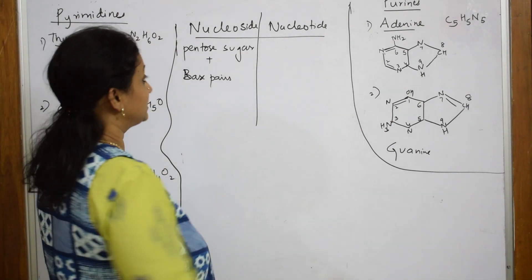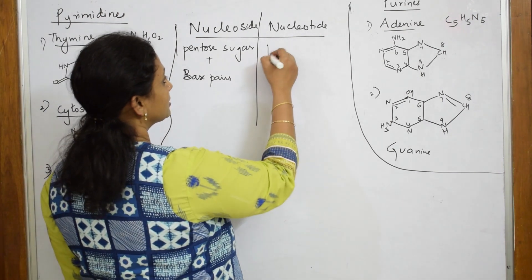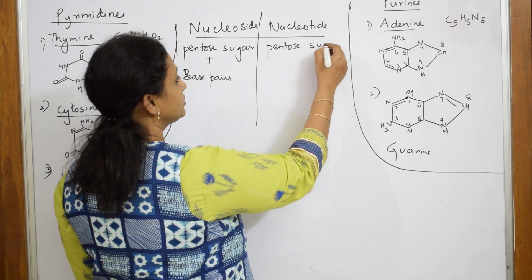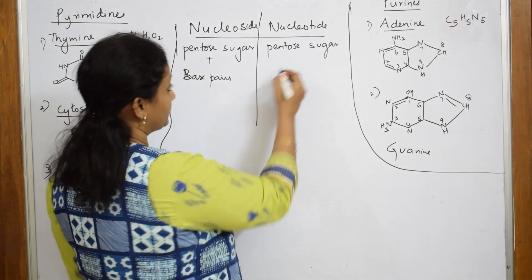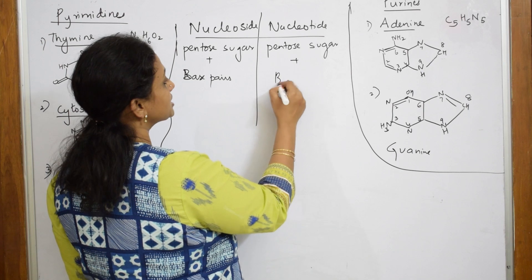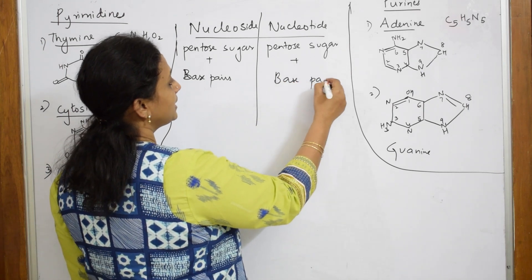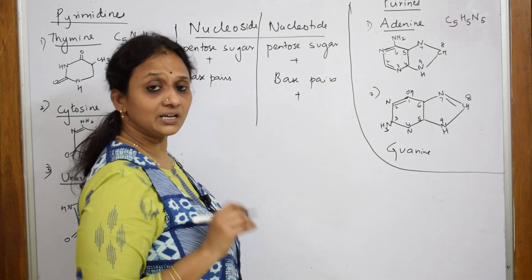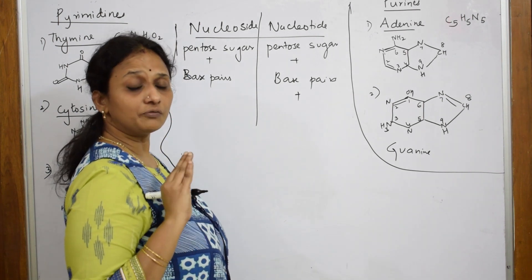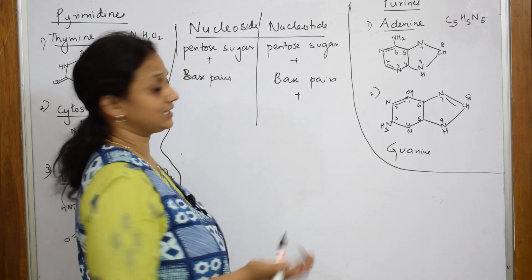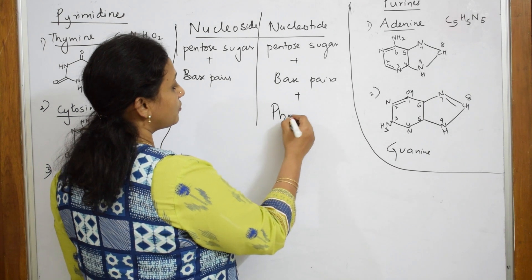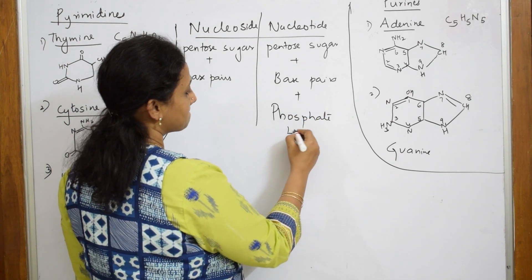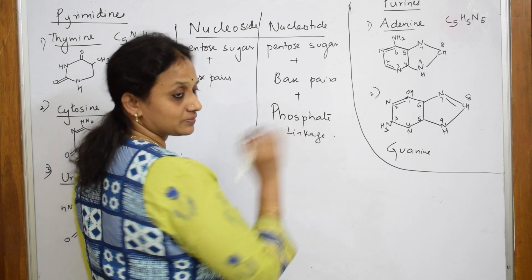When I speak about nucleotide, a nucleotide contains three units: pentose sugar, base, and most importantly phosphate bonds, which form the phosphodiester linkages — also called phosphate bonds.